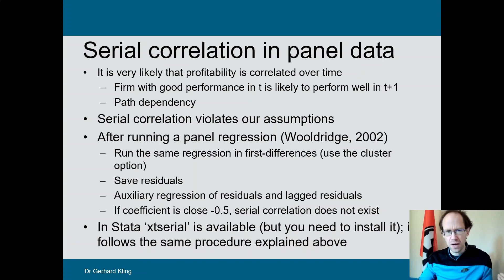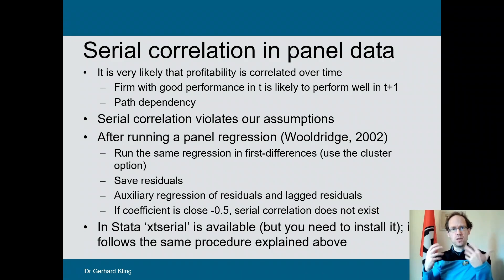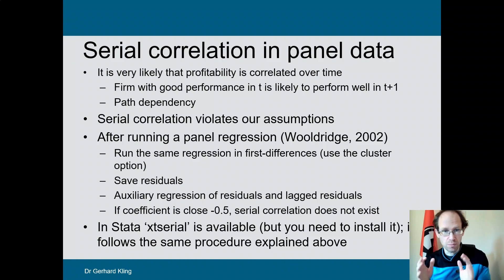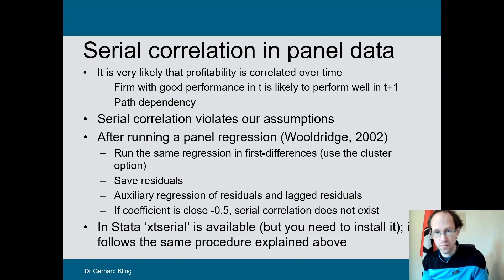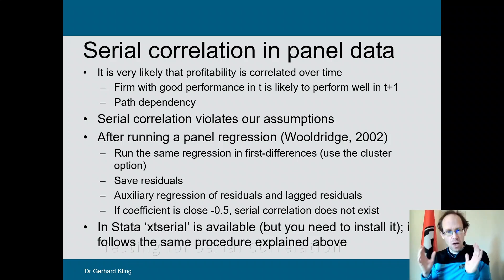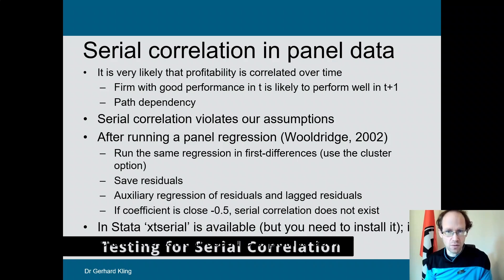You call this also path dependency. In our example from previous lectures exploring firm profitability, it is quite likely that a firm with good performance in the past maintains good performance going forward. So there is a tendency to stick to a certain level of performance. Now how can we detect serial correlation?